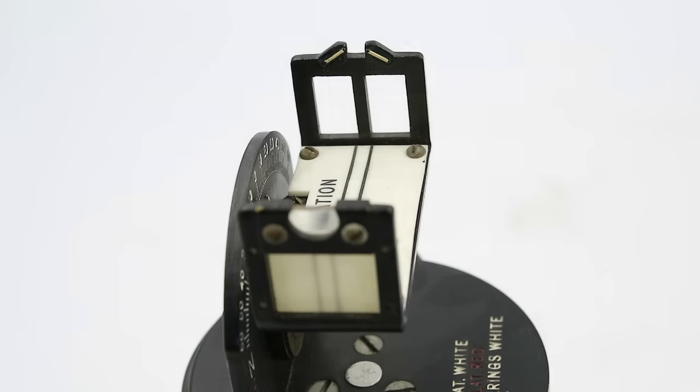You have at the back here a pair of luminous lines to allow you to more easily align the sight at night. Just like pretty much every aircraft instrument of this period, those have been filled with luminous radium paint.